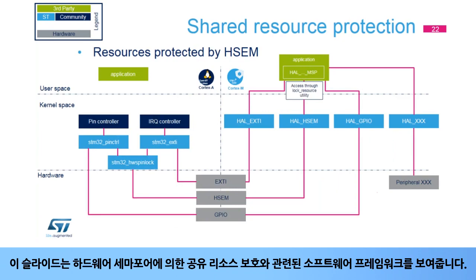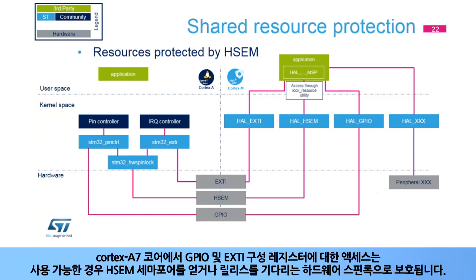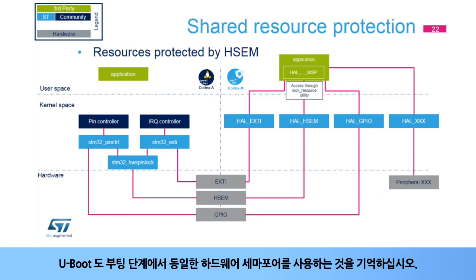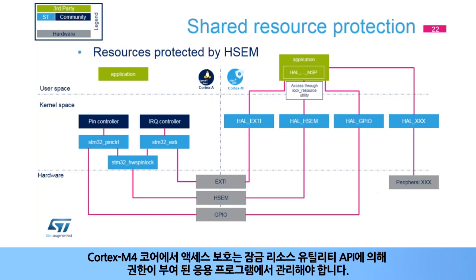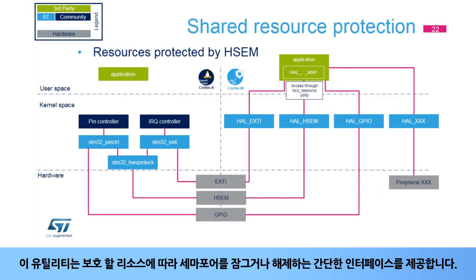This slide shows the software framework involved in the protection of shared resources by the hardware semaphore. On the Cortex-A7 core, accesses to the GPIOs and EXTI configuration registers are protected by the hardware spin lock that gets an HSEM semaphore if free or waits for its release. Note that the U-Boot bootloader also uses the same hardware semaphore during the boot stage. On the Cortex-M4 core, access protection has to be managed by the application, granted by the Lock Resource Utility API. This utility offers a simple interface to lock or unlock a semaphore depending on the resource to protect.